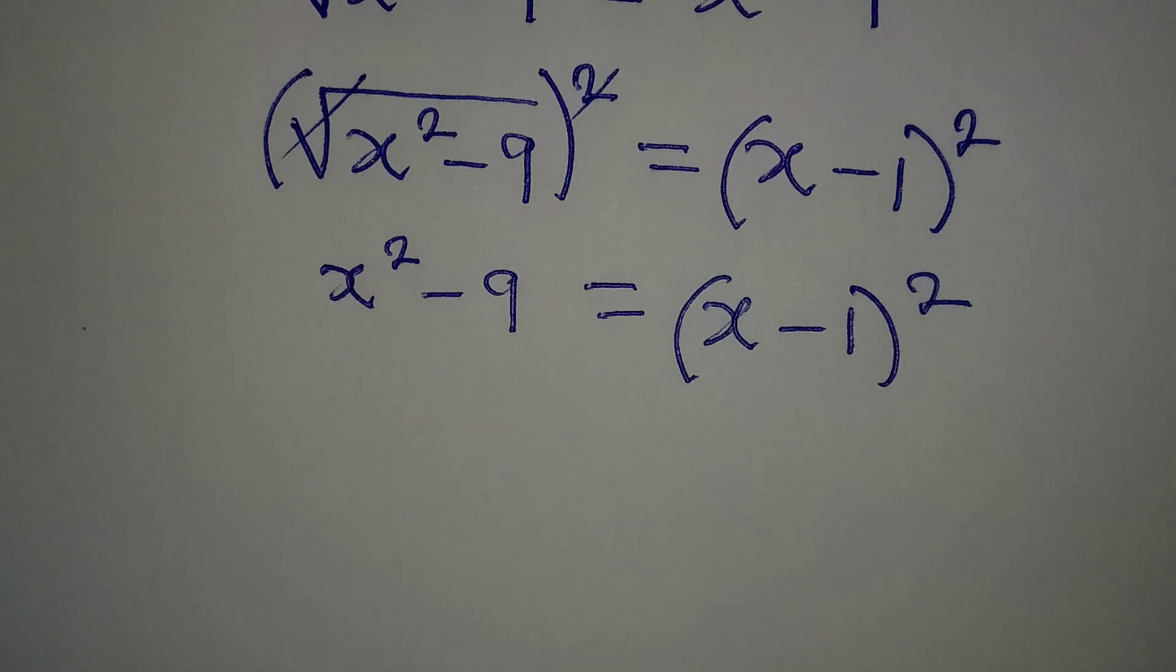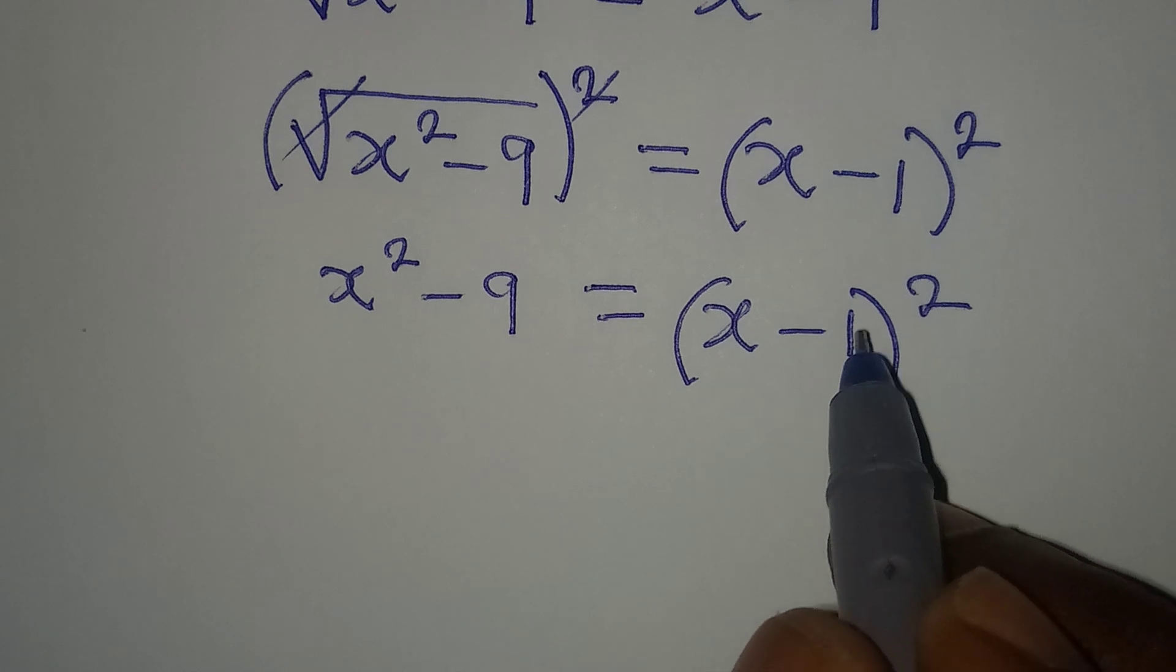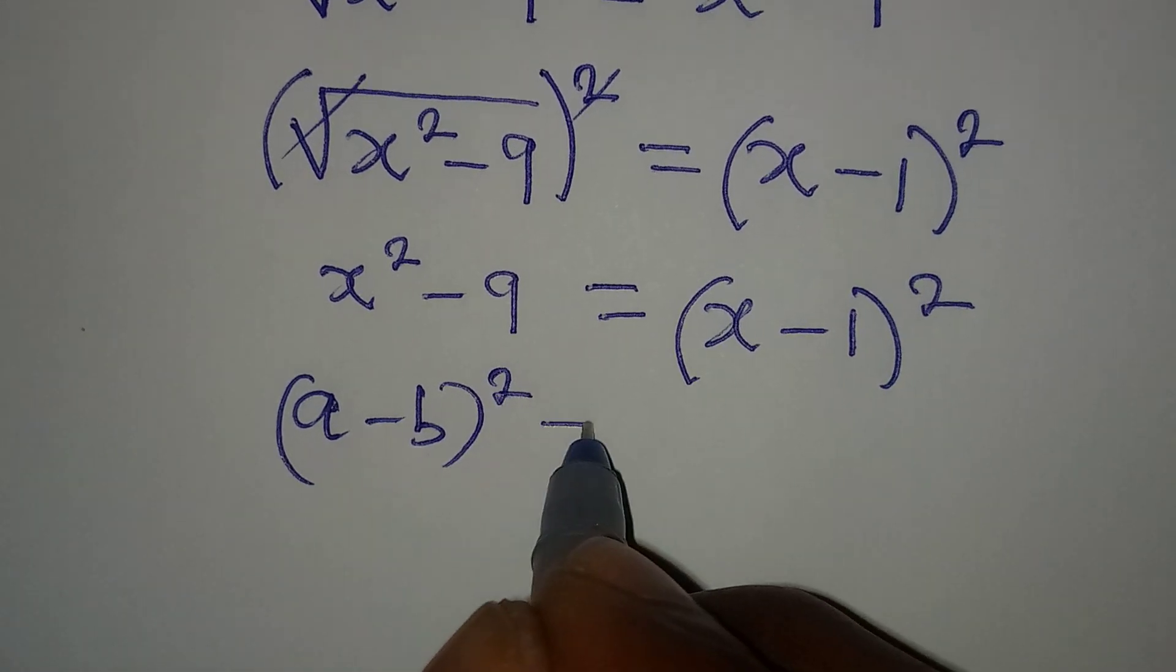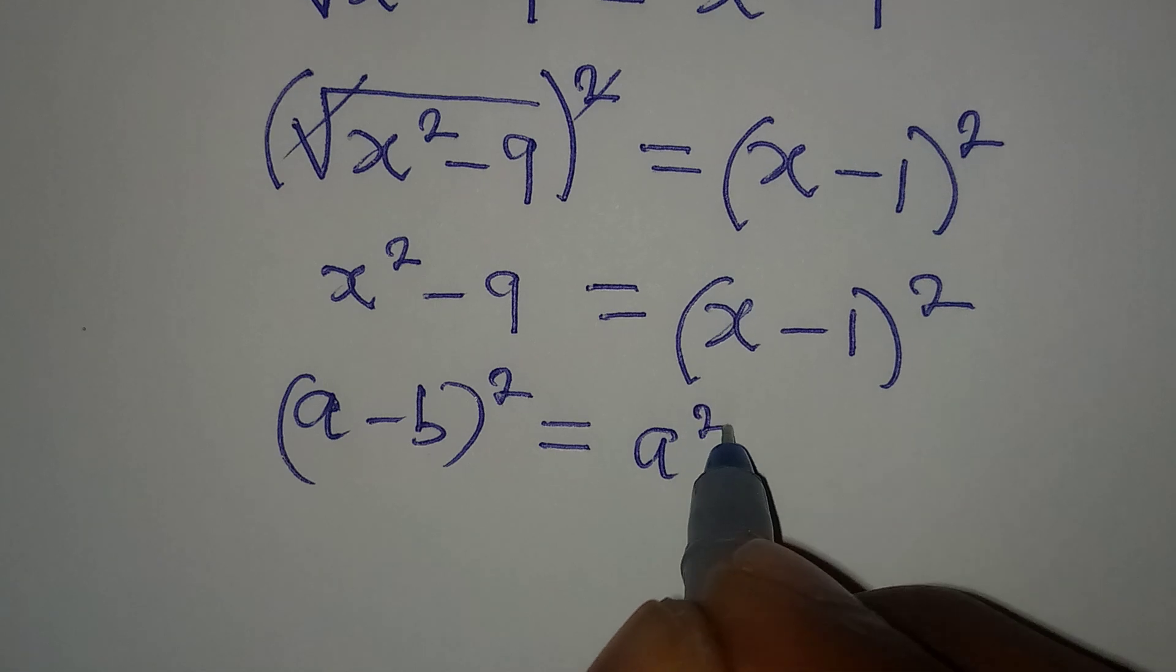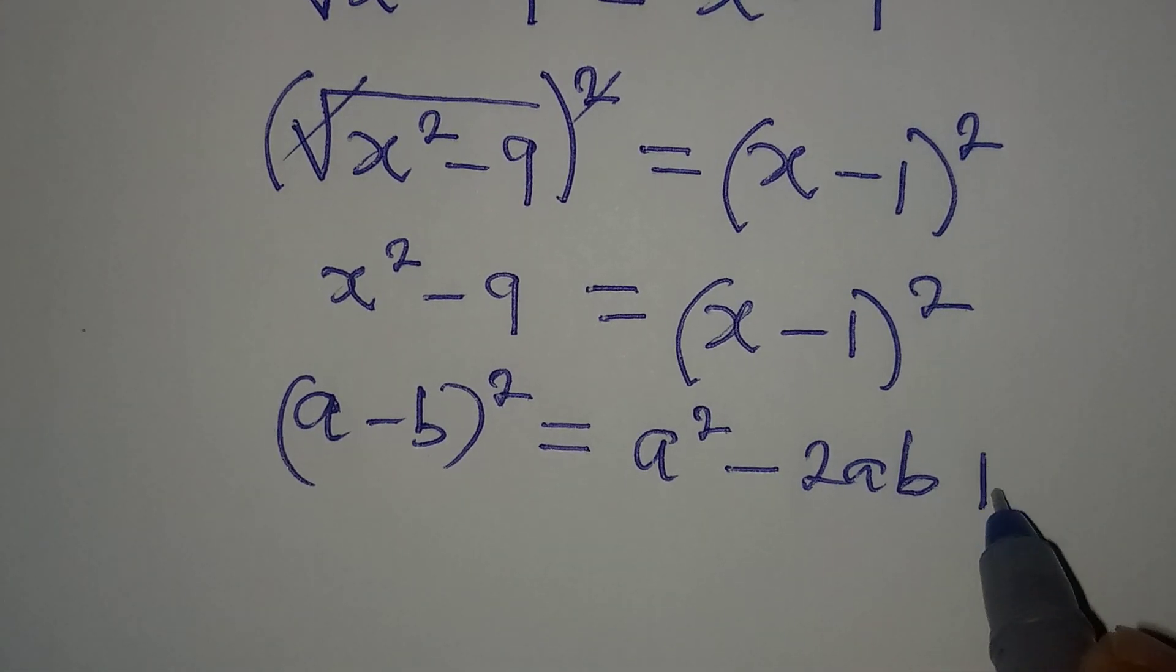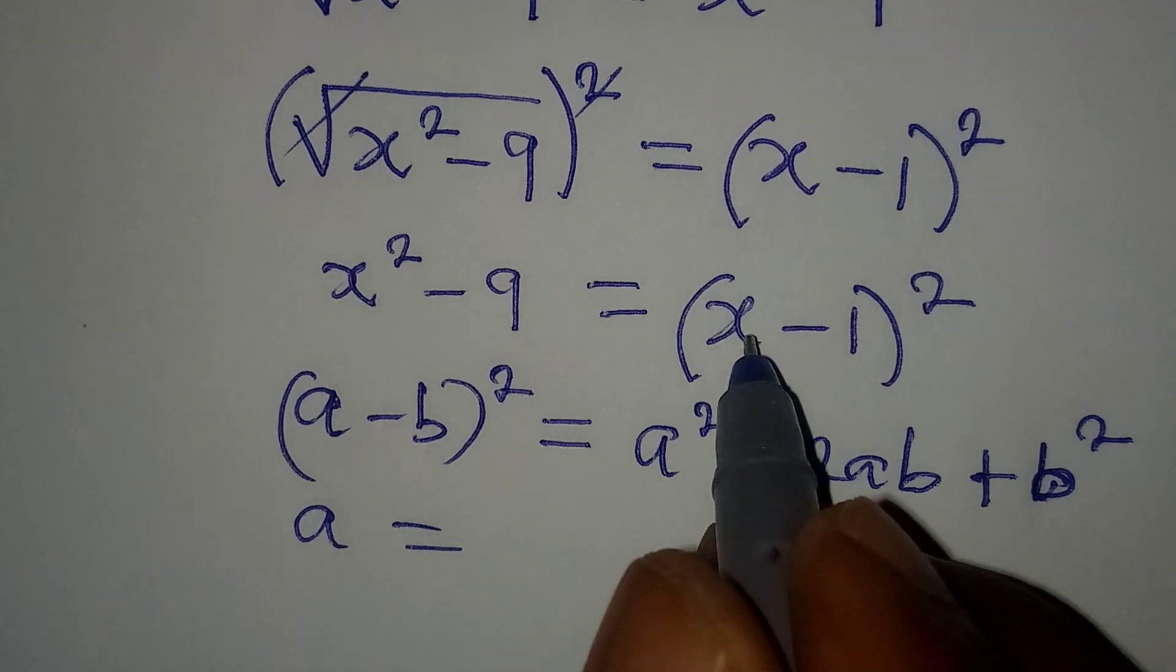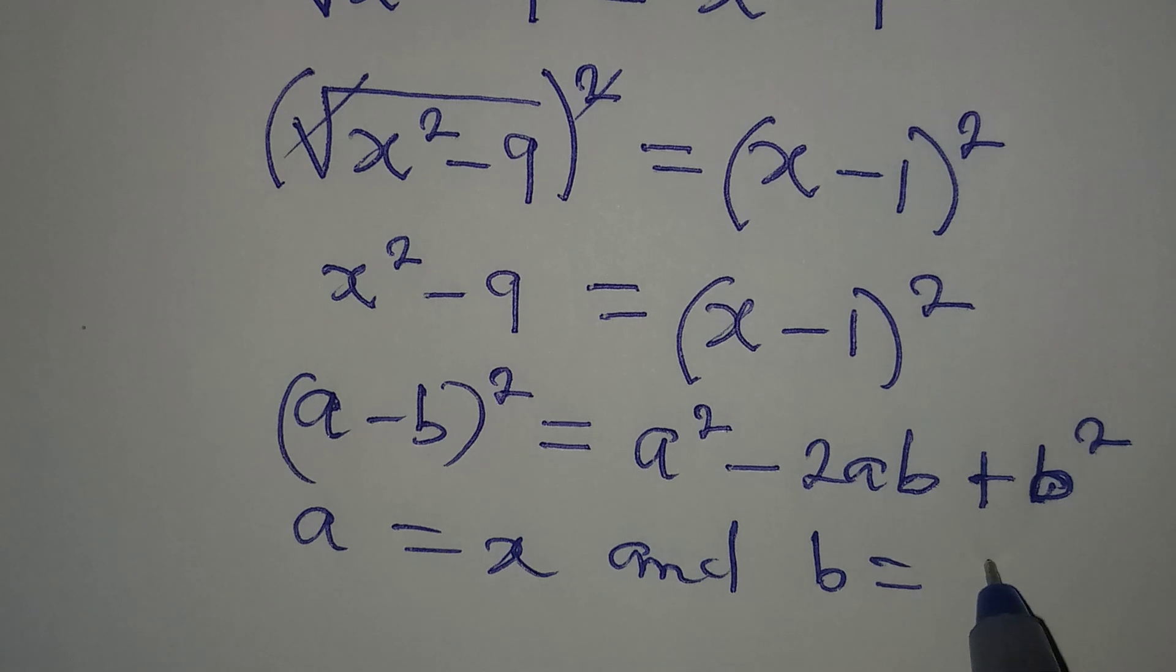Okay, so from here we can expand what we have. But remember that if you have a minus b squared, this is the same thing as a squared minus 2ab plus b squared. So this means that our a now is going to be x and our b will be equal to 1.